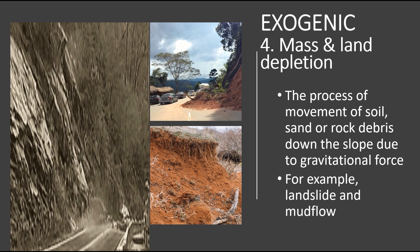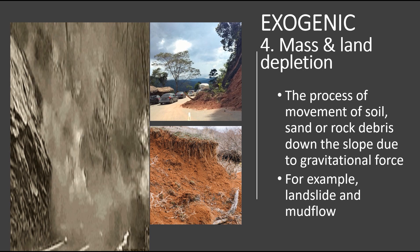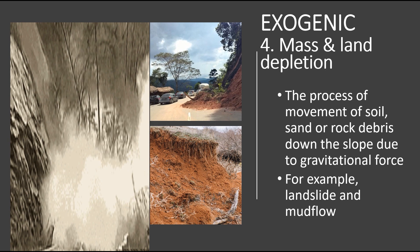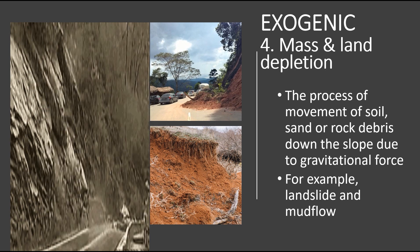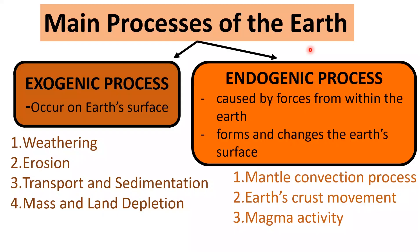Examples of mass and land depletion are landslides and mudflows. Next, let's look at the endogenic process.